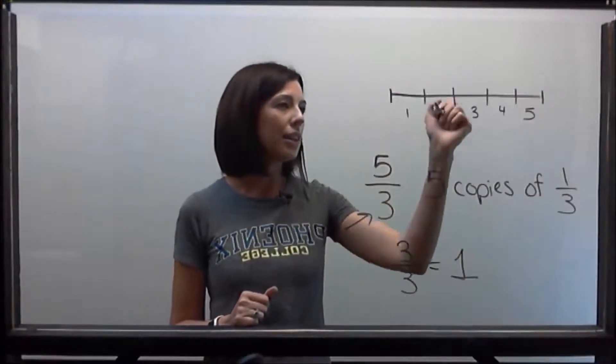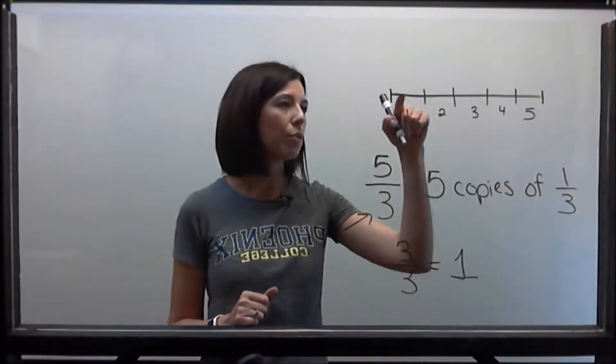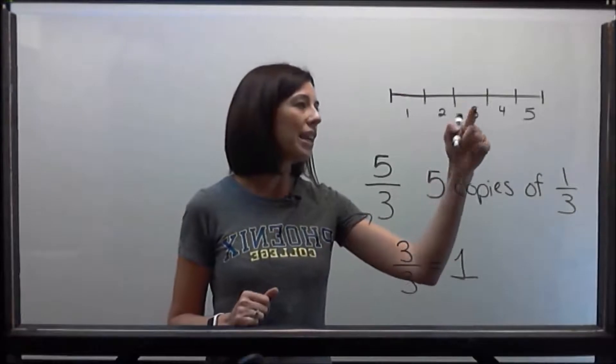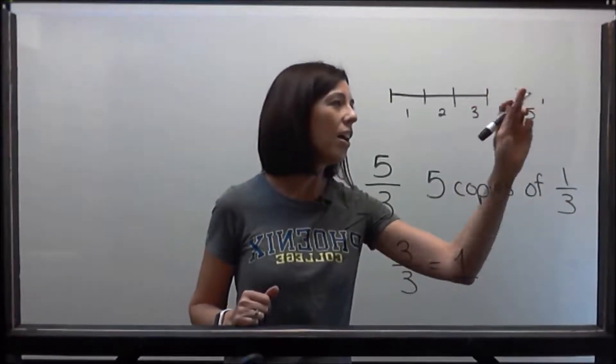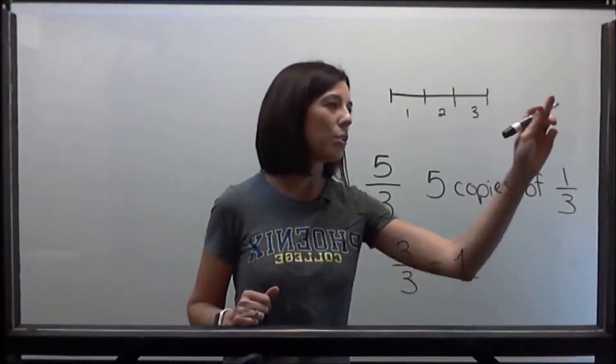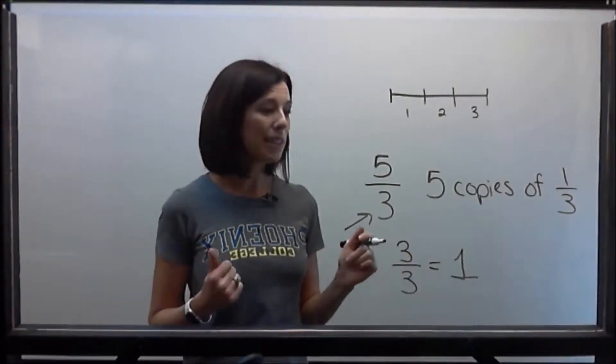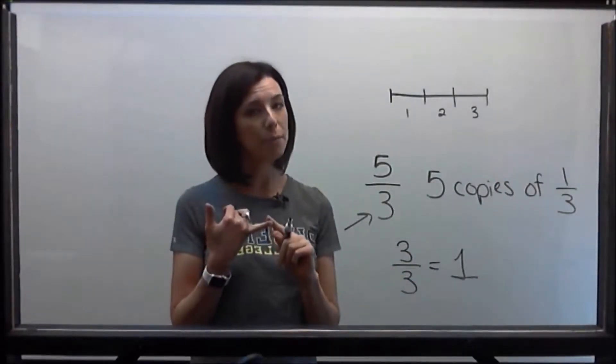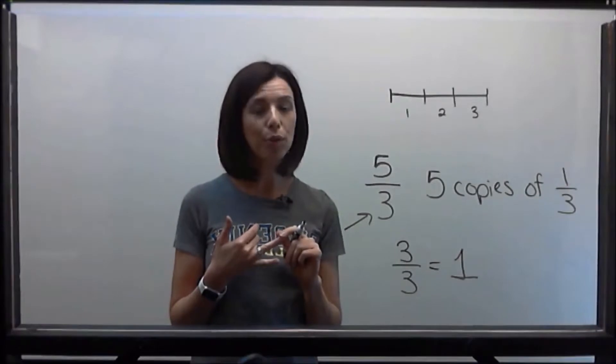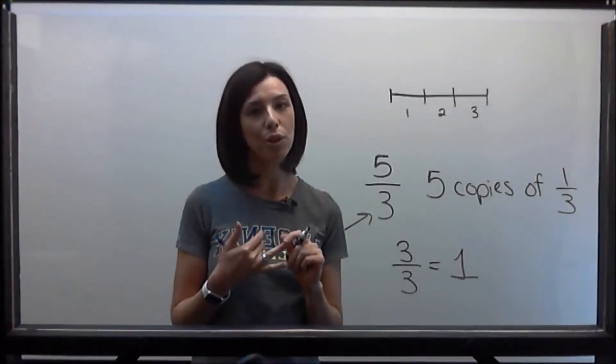What I need to do here is count three copies: one, two, three. I'm going to need to take off these last two copies. So I would need to first cut it into five pieces, then remove two of those copies of 1/3, or remove 2/3.